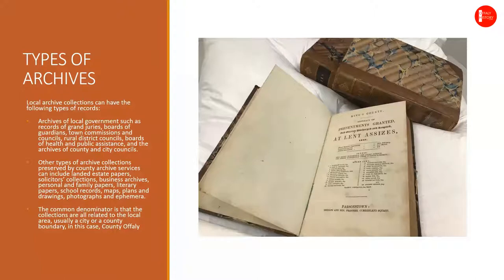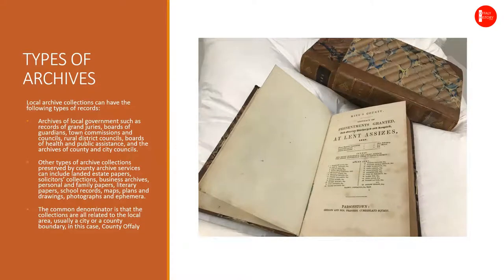So what exactly does Offaly Archives hold? It is a county archive collection and typically holds archives of local government, which is the administrative history of the county — from the papers of the grand juries, the boards of guardians, town commissions and councils, rural district councils, the boards of health and public assistance, and the county and city councils themselves. Other collections can include landed estate papers, solicitors' collections, business archives, personal and family papers, literary papers, school records, maps, plans, drawings, photographs and ephemera, reflecting the social history of the county.